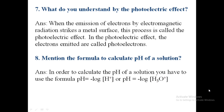Eighth question: mention the formula to calculate pH of a solution. In order to calculate the pH of a solution, you use the formula: pH = −log[H⁺] (concentration of H⁺ ions), or pH = −log[H₃O⁺] (concentration of hydronium ions).